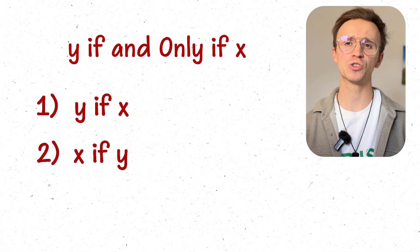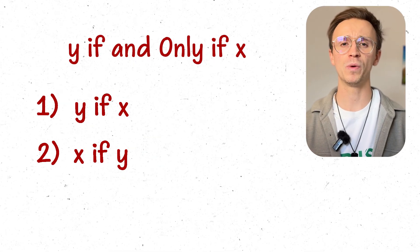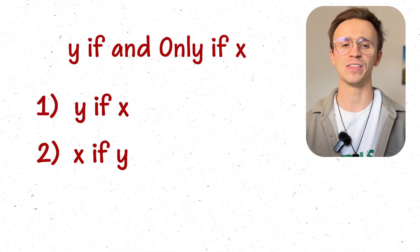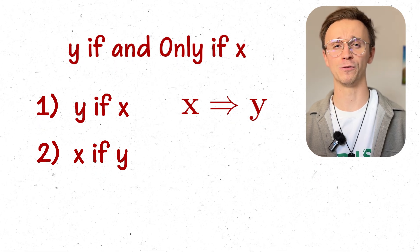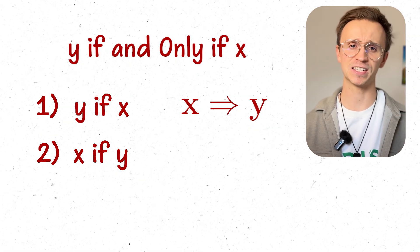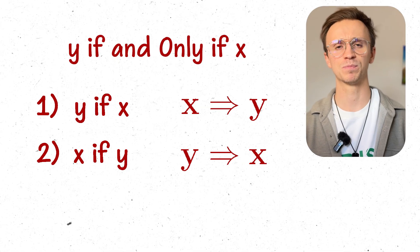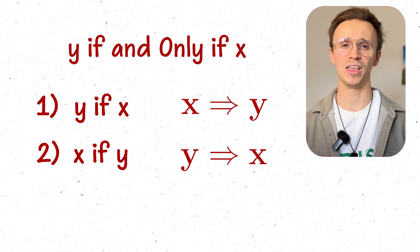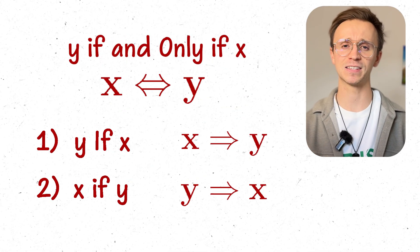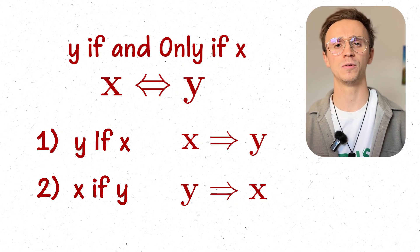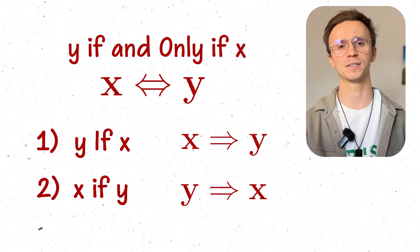Now we can use some maths notation to simplify this. We can say that x implies y with a double arrow for the first statement, and then for the second statement y implies x. We can even combine them with our if and only if statement to say x double-arrow y. So it's a bi-directional thing: x implies y, y implies x.